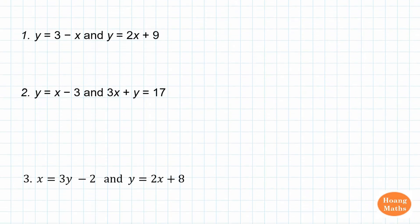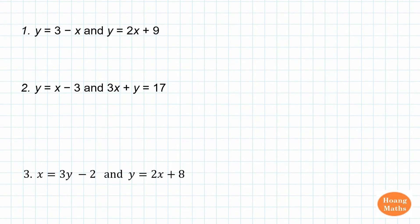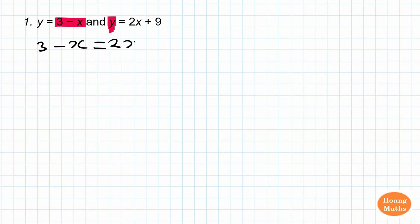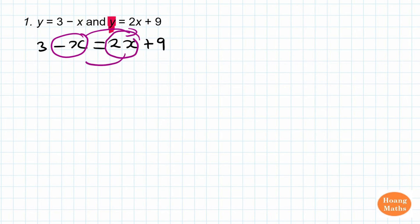Please stop the video and try this one yourself. We have y is equal to 3 minus x and y is equal to 2x plus 9. So what we can do is substitute y equals 3 minus x into the second equation. It doesn't matter if you want to move the 2x to the other side — you get the same result.